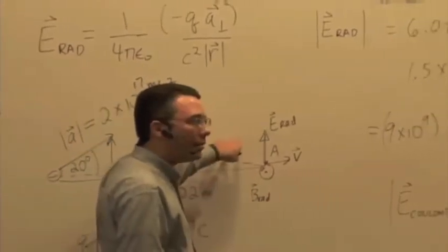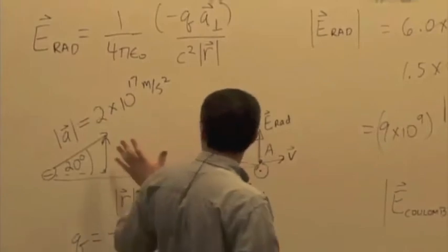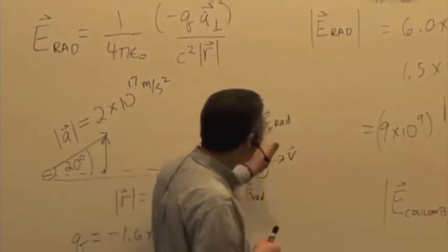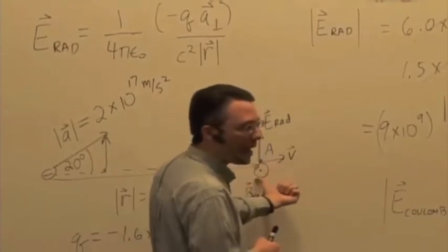Well, you've already done that, right? So it doesn't matter. Once you know that the electron has produced this direction of E_radiative, then you have to have this magnetic field.